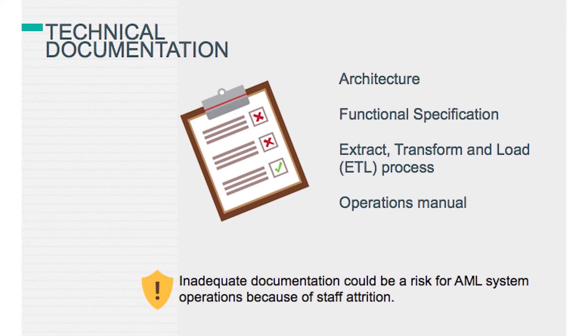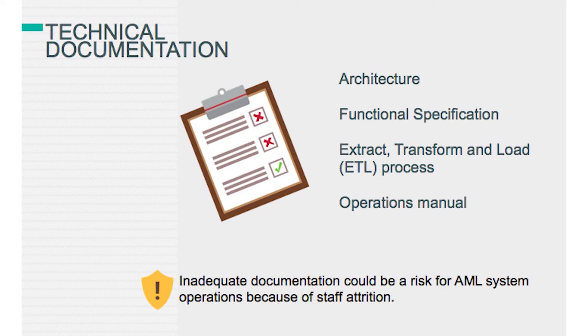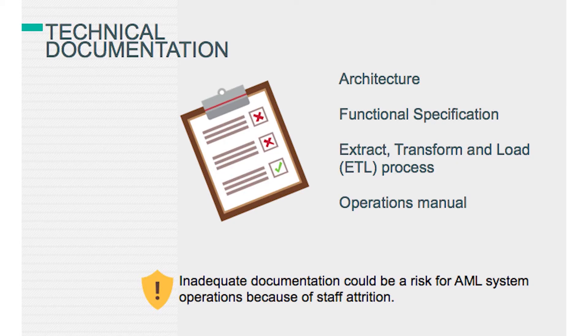Architecture covers how the system is set up and how components communicate. Functional specification details how the model is implemented and its components — going a step further than requirements into technical specification. The extract, transform, and load (ETL) process gets data from your source systems and sends it to the AML system. There are rules and filtering happening here — you need to keep an eye on that, because filtering out accounts means you could be missing things. Transaction mapping is also critical: you might think something is an international wire but it's actually domestic, or vice versa. The quality of the implementation will affect the quality of your system.